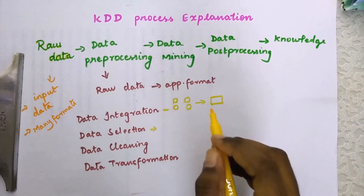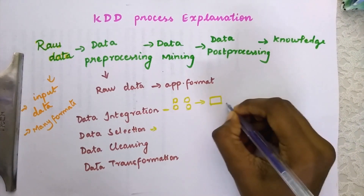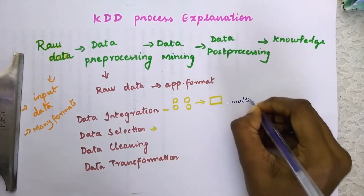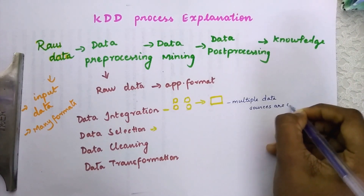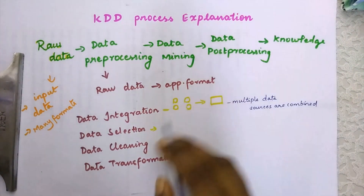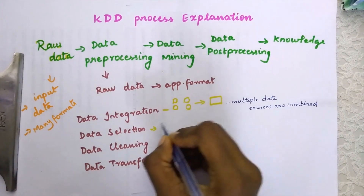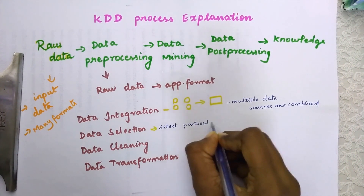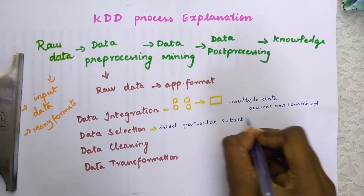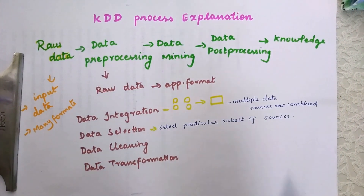In data selection, we are going to select a subset. Here we are combining multiple data sources, and in this step we are going to select only the wanted data for the data mining task — a particular subset of sources for the data mining process.